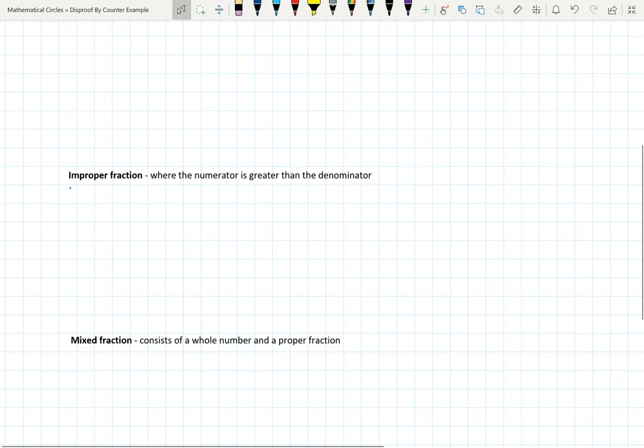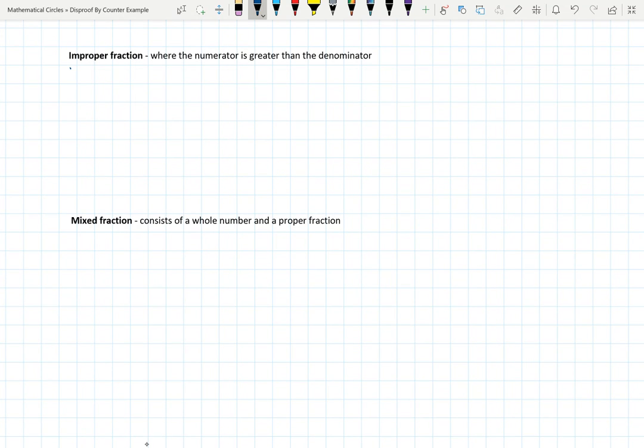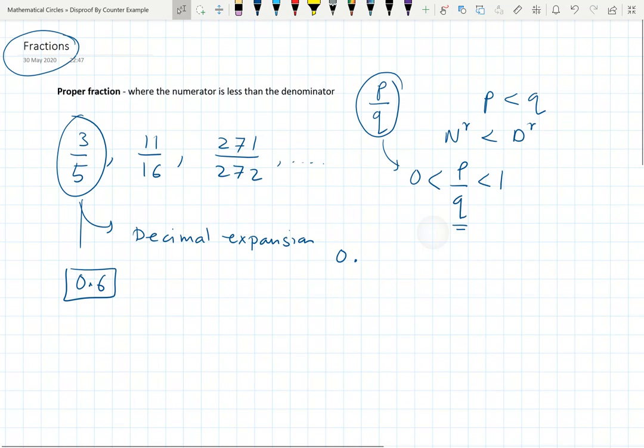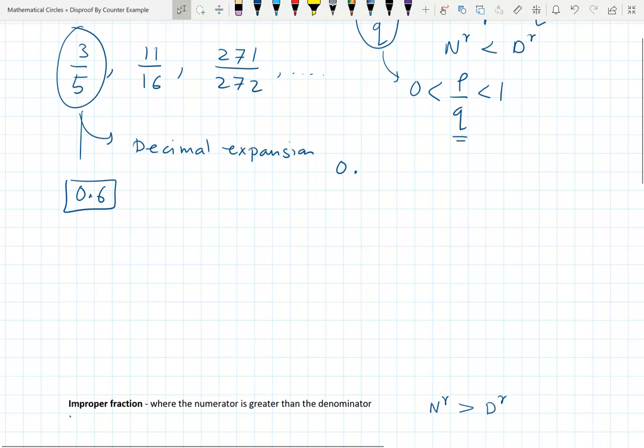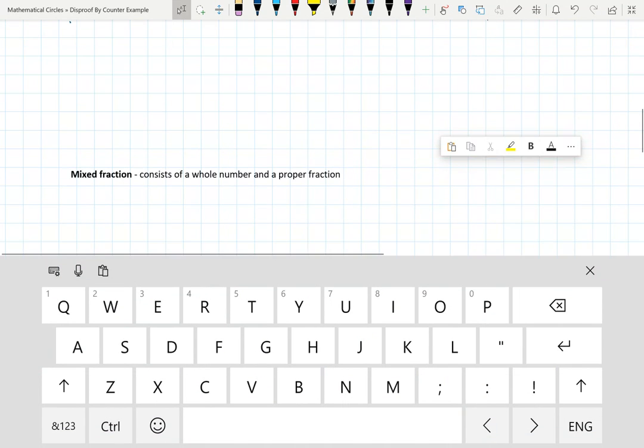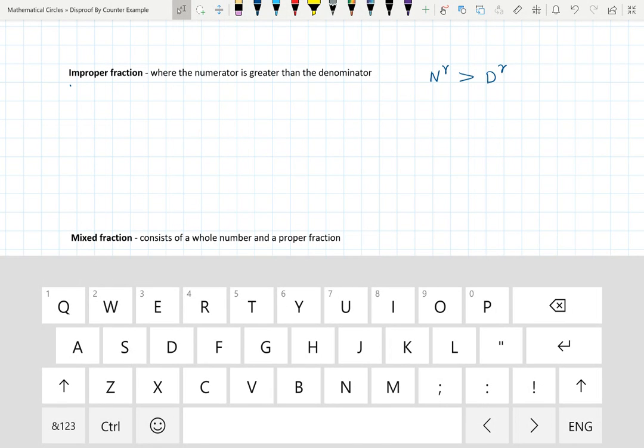Now, what is improper fraction? Improper fraction, simply, numerator is greater than denominator. Earlier numerator was less than denominator. Now numerator is greater than denominator.